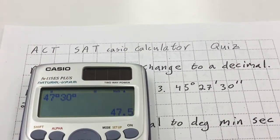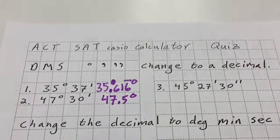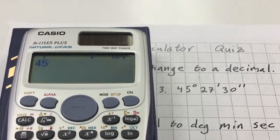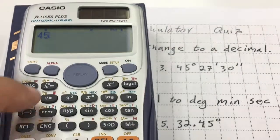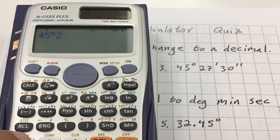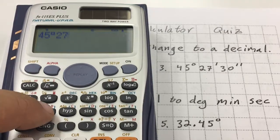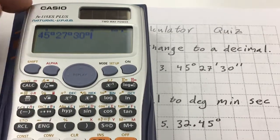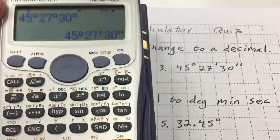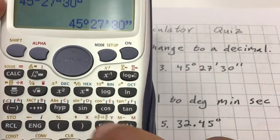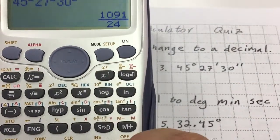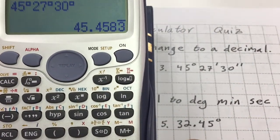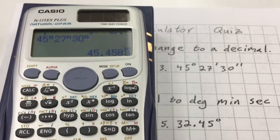For 45 degrees, 27 minutes, and 30 seconds: type in 45, hit the degree button, then 27, hit the DMS button again, then 30 seconds, hit that again, then hit equals. Hit the SD button twice and it's going to be 45.4583 repeating degrees.